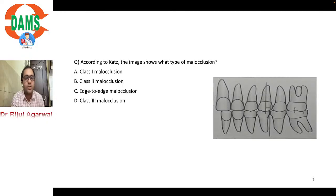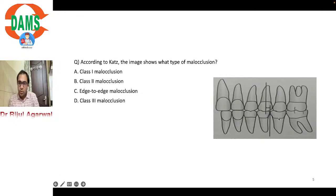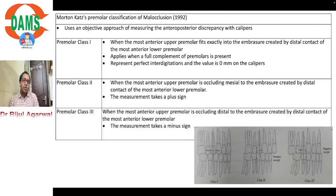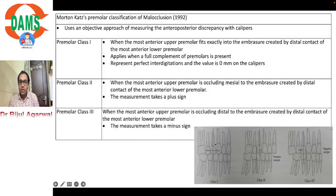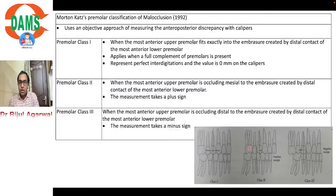This question is a bit difficult if you don't know Catt's premolar classification. In Catt's premolar classification: Class 1 means the first maxillary premolar falls into the groove between the lower two premolars. Class 2 means the cusp tip is ahead of that groove. Class 3 means it will be behind the groove. In the image, the examiner has marked two lines clearly to help answer the question.